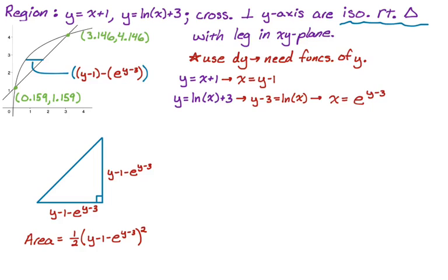So that's the area of a cross section. And then in general, when I do these types of problems, I have to integrate the area of a cross section. So the volume that I'm looking for is going to be the integral. Now I'm working with everything as a y value. So the bounds are going to be the lower y value, which is 1.159 to the upper y value, which is 4.146.